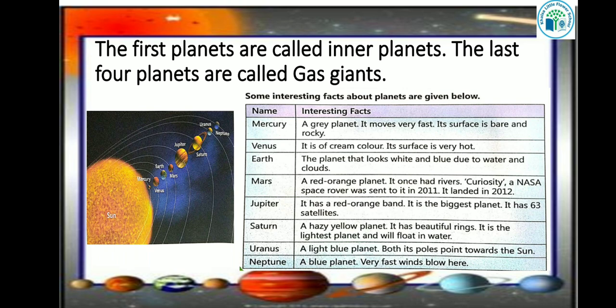Earth is the planet that looks white and blue due to water and clouds. Next is Mars — a red-orange planet that once had rivers. Curiosity, a NASA space rover, was sent to Mars in 2011 and landed in 2012.